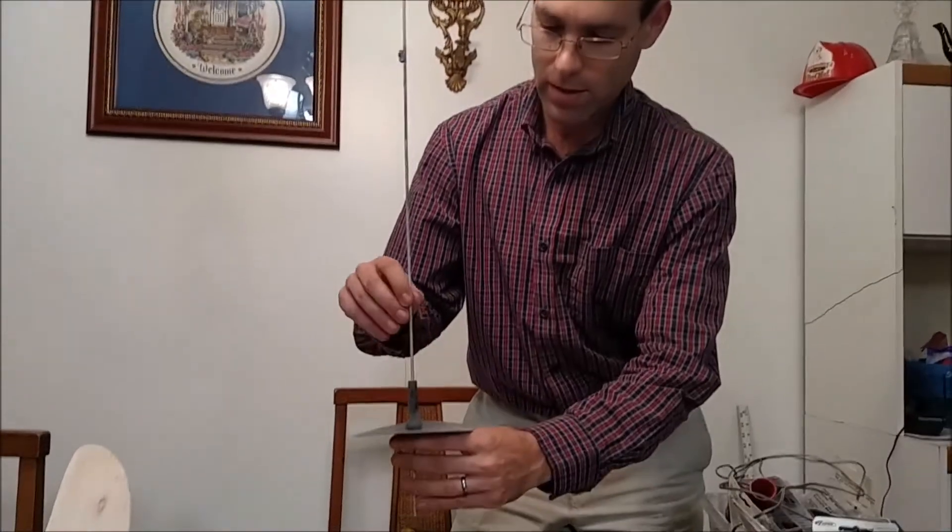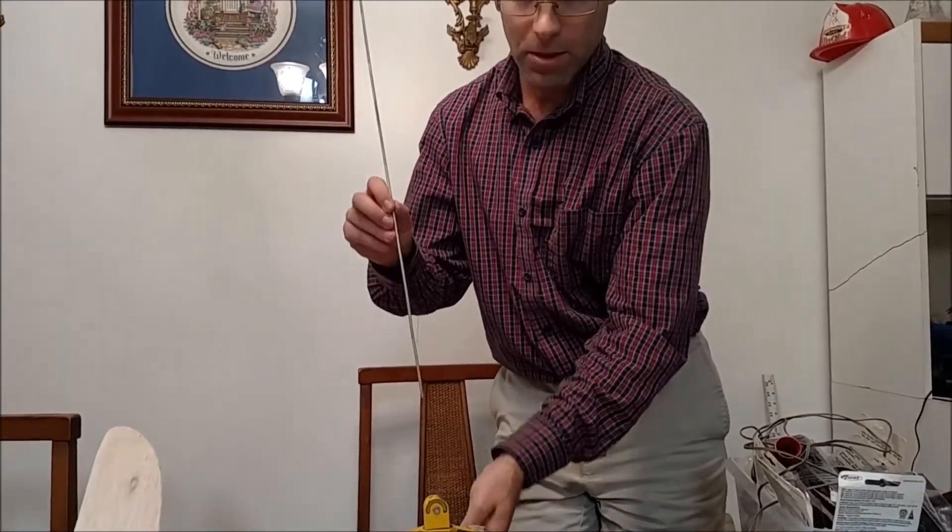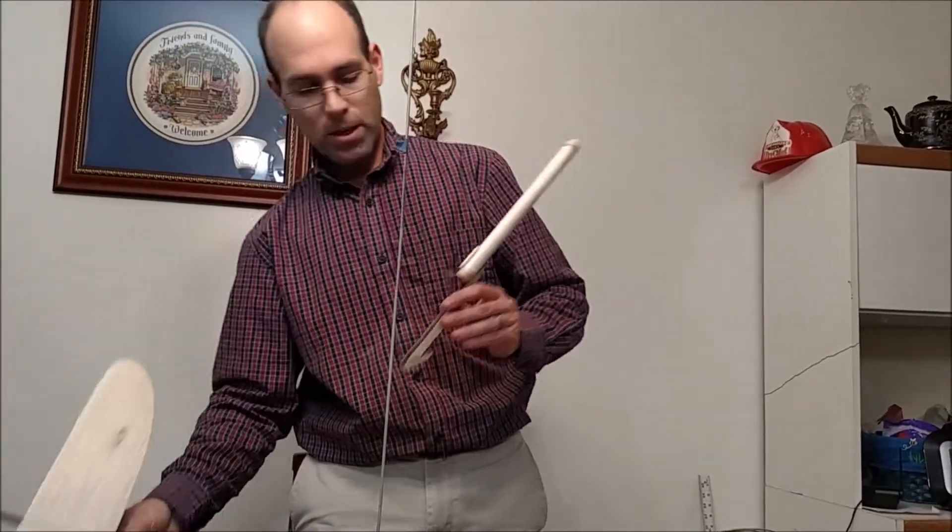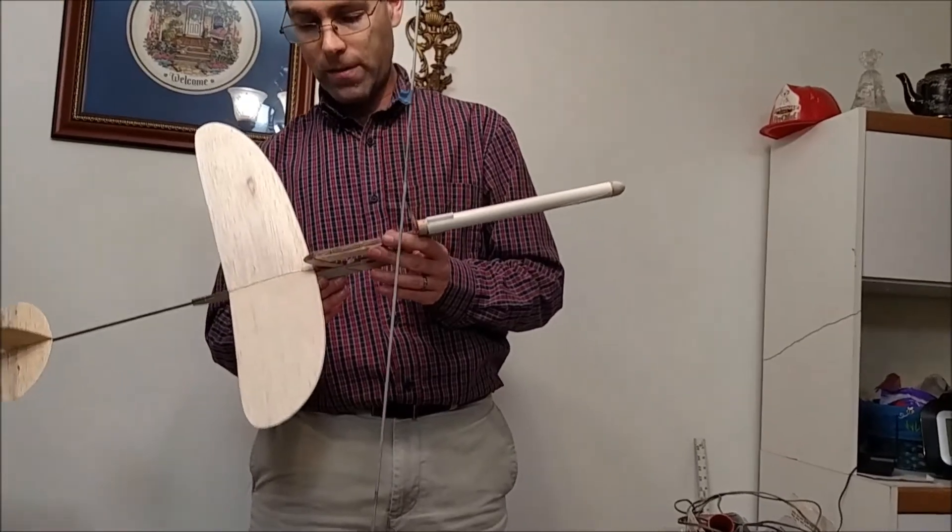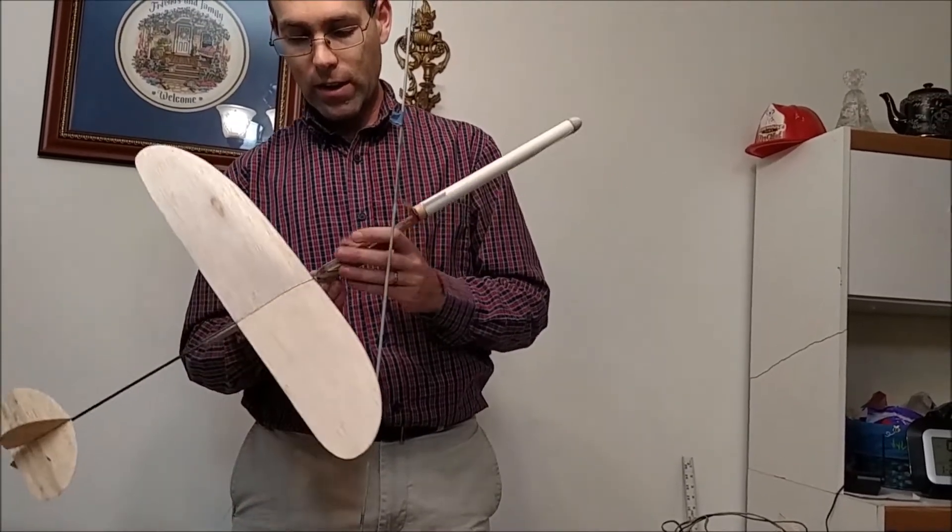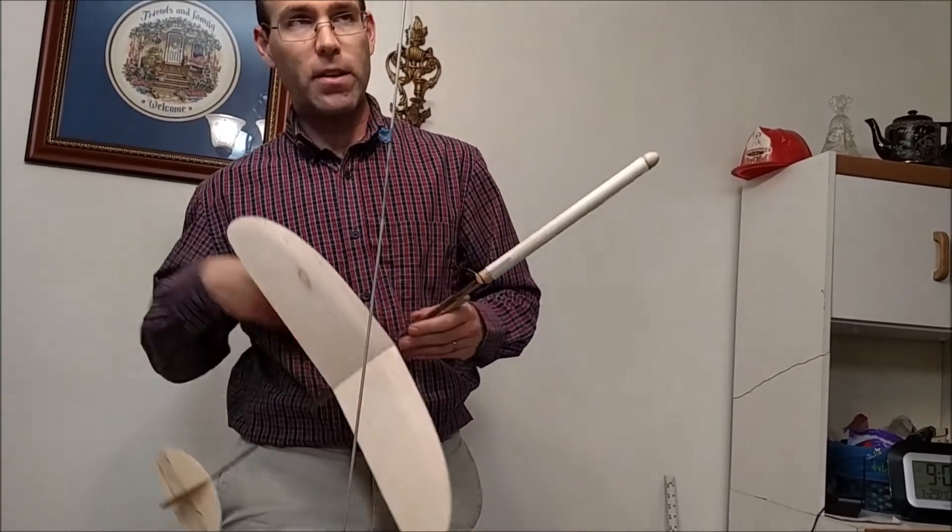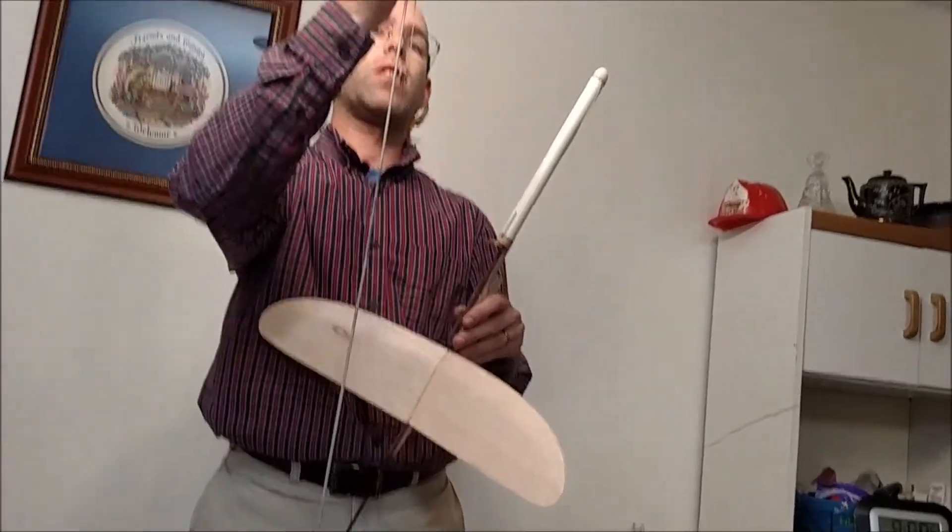Now before we step any further, I'm going to do something that is going to make people go nuts, and that is I'm going to take the blast deflector off. The reason we take the blast deflector off is this model spaces the engine so far off the ground that it's not necessary and it actually gets in the way of us having enough useful length on our launch rod.